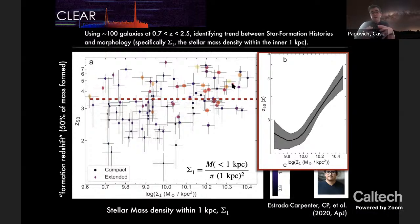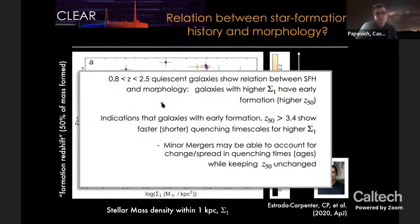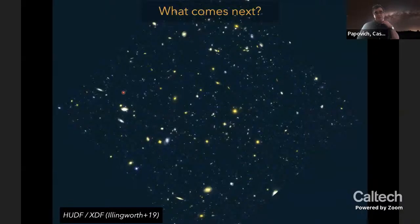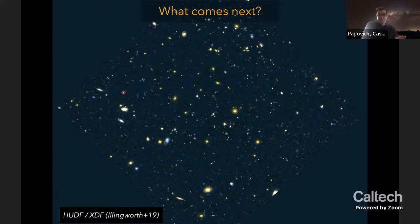In summary, slitless spectroscopy capabilities will be around for the coming decades — James Webb, the Roman Space Telescope, and Euclid all have this capability. With improved computer modeling to do complex spectral decomposition iteratively, this mode will be more and more useful, particularly as we go to larger and larger datasets.